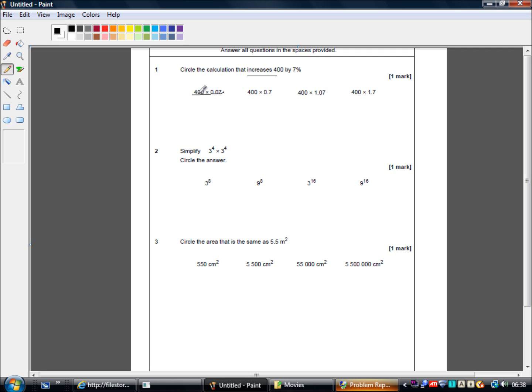That as it turns out is the formula to calculate 7% of 400 and we want to increase 400 by 7%. So we're going to want 400 times 0.07 but we also need to add 400 to that. Here 400 times 0.7, well that's 7 over 10 which is 70 over 100. So that's going to find 70% of 400 and we don't want that either because that's going to be less than 400.